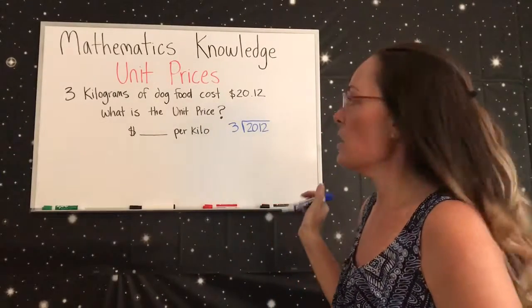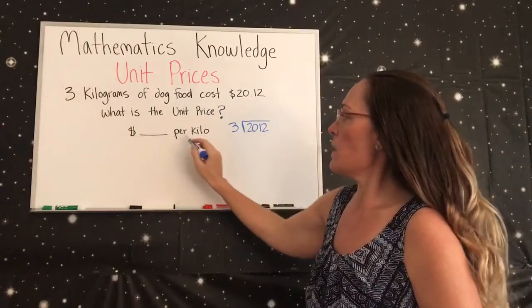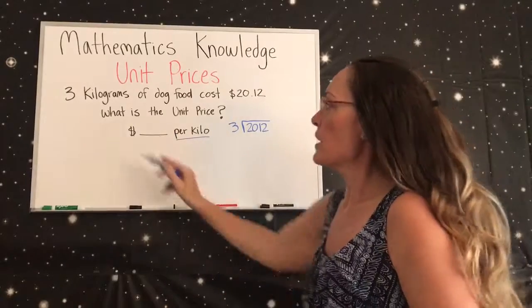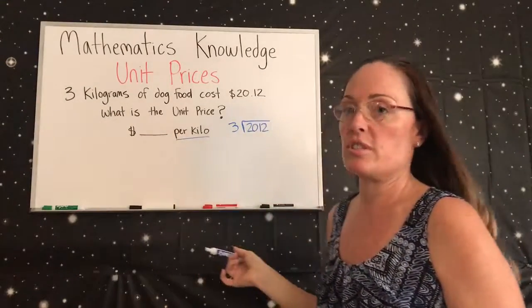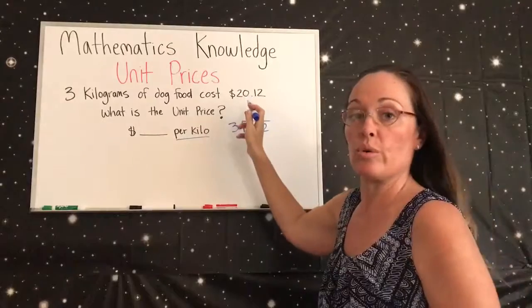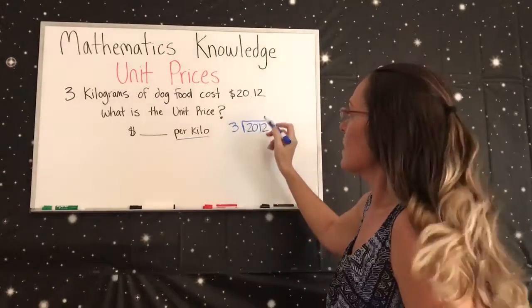The question is how much money per kilo. We have 3 kilograms, so we just divide that 3 into the total cost of $20.12 and we will get our price per kilo.